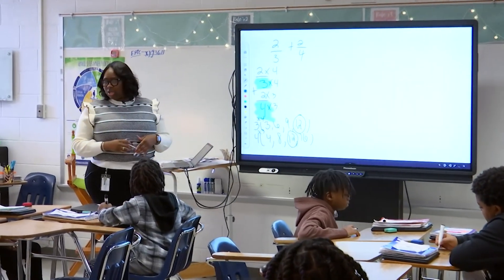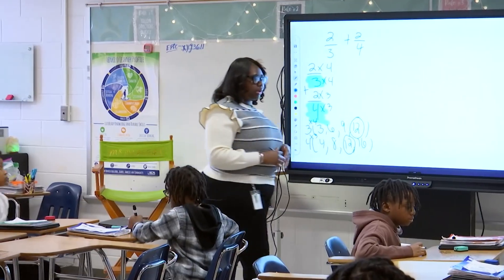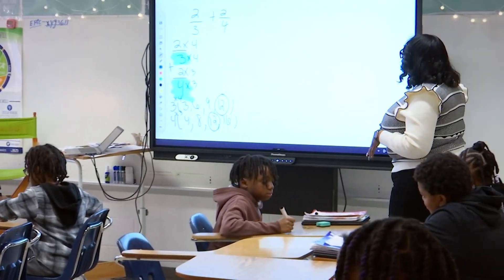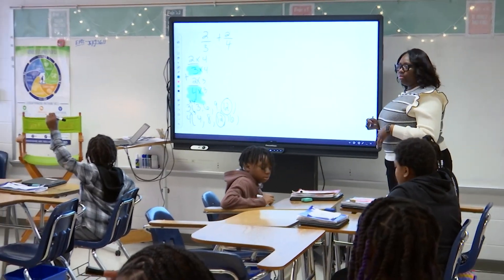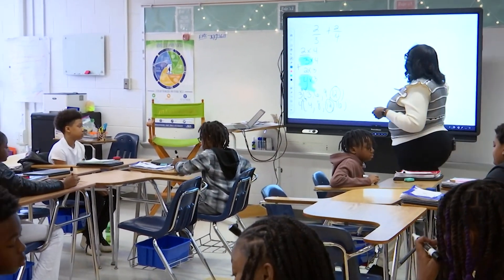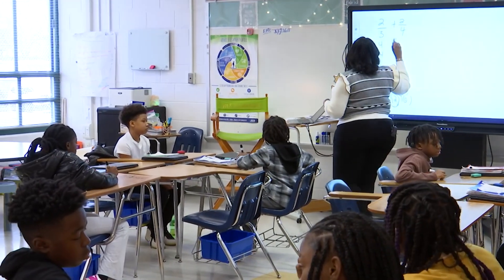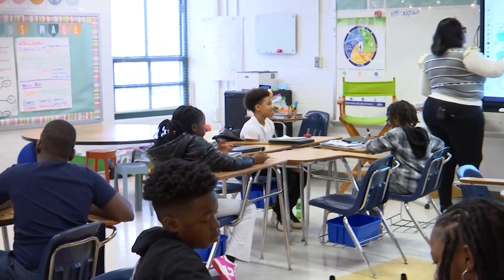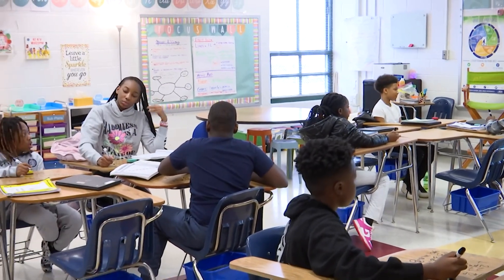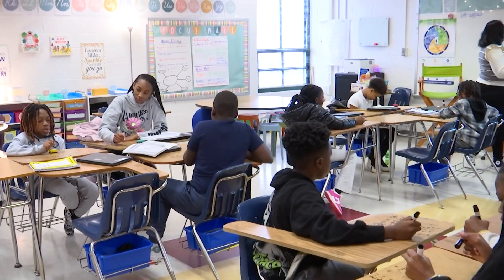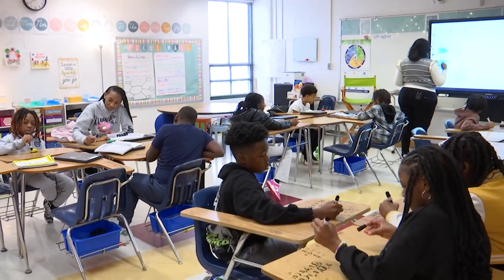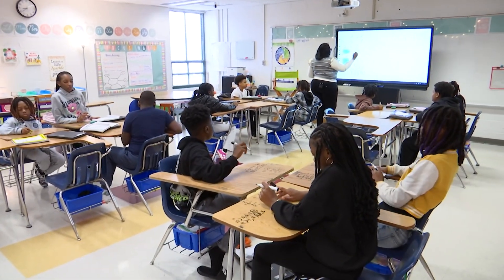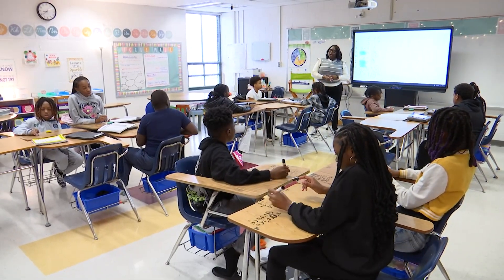You should all have this on your desk. What is two times four? Eight. What is three times four? Twelve. What is two times three? Six. And what is four times three? Twelve. So do we have like denominators now? Yes.